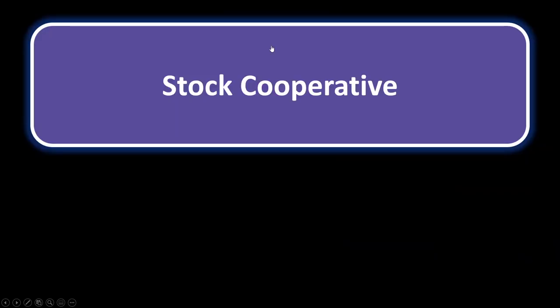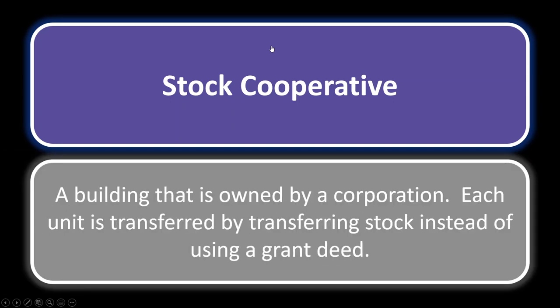Stock cooperative, or stock co-op. This is a building owned by a corporation where each unit is transferred by transferring stock instead of using a grant deed. The amount of stock you hold corresponds to the unit you get. To transfer a unit in a stock co-op, you transfer the stock rather than using a grant deed — and in California, the grant deed is the most popular method for standard transfers.